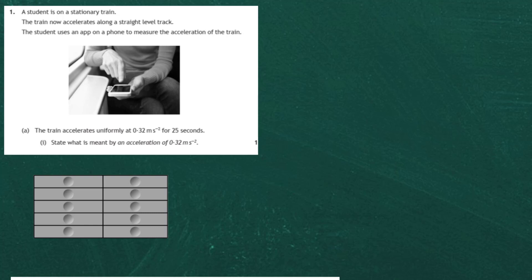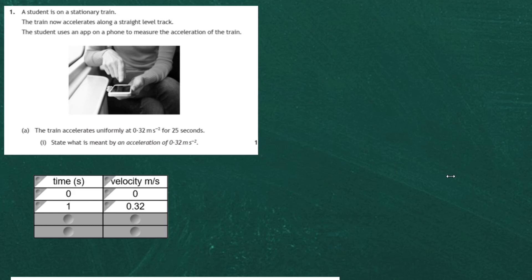To answer that for one mark, you simply have to say the train is going to increase its velocity by 0.32 meters per second every second of its journey. We can have a little table here with time and velocity. At time zero seconds it's at rest — zero — because the train is not moving. One second later it's going to have a velocity of 0.32 meters per second. That's the definition of acceleration.